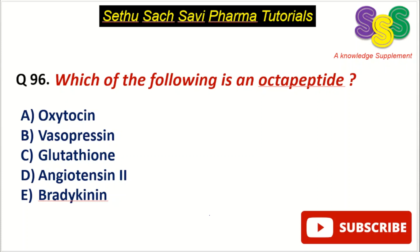Hello everyone, welcome back to the question answer discussion session. Today's question is: which of the following is an octapeptide? Choice A: oxytocin, B: vasopressin, C: glutathione, D: angiotensin 2, and E: bradykinin.